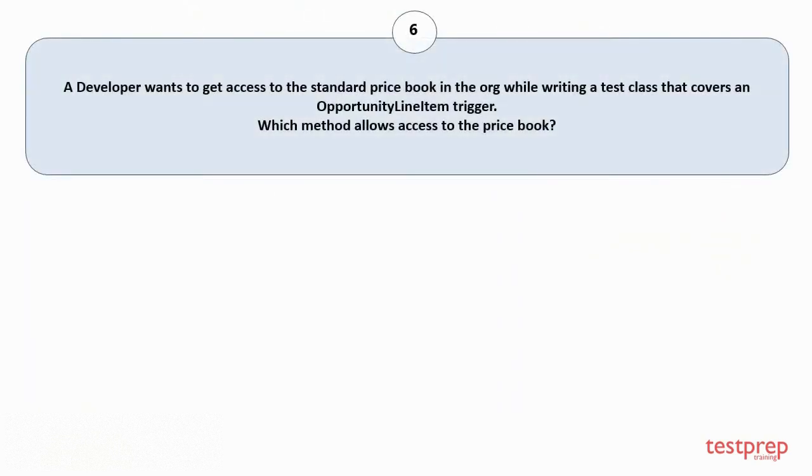Question number 6: A developer wants to get access to the standard price book in the org while writing a test class that covers an opportunity line item trigger. Which method allows access to the price book? Your options are.